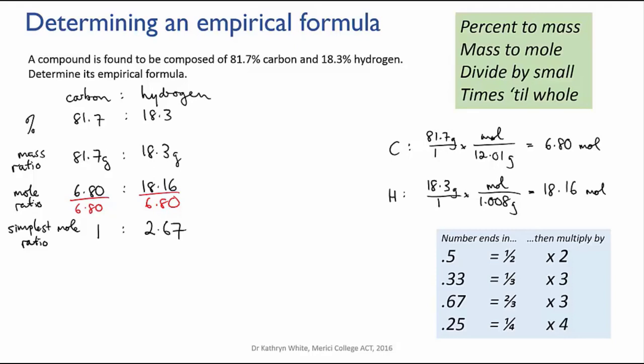If it ends in 0.33 or 0.67 or close to, then it's something and a third or something and two thirds. And you'll need to multiply through by 3 to make that fraction a whole number. And if it ends in 0.25 then it's something and a quarter. And you multiply through by 4.